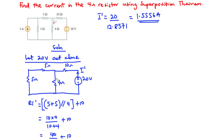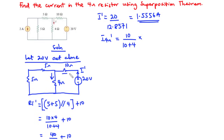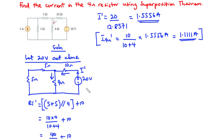Using the current division rule to find the current through the 4 ohms resistor when the 20 volts is acting alone: I4Ω prime = 10 / (10 + 4) × 1.5556 = 1.1111 amperes.